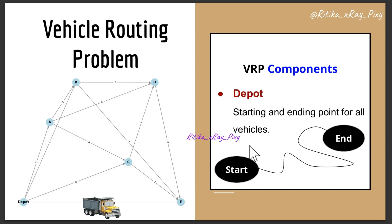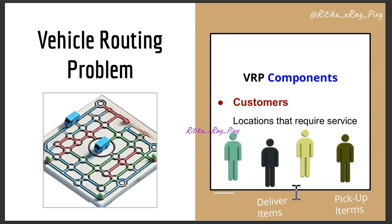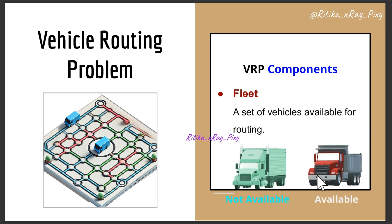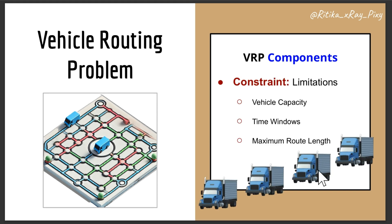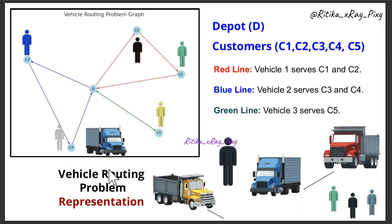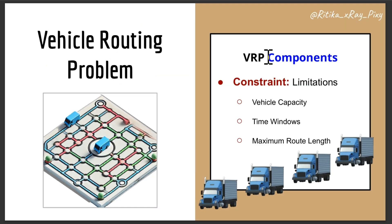The basic components of VRP are: the depot — the starting and ending point for all vehicles; customers — locations that require service like delivery or pickup; the fleet — the number of available vehicles, each with a given capacity; and constraints — restrictions or limitations like vehicle capacity, time windows, or maximum route length. The objective is to minimize total distance, time, and cost while satisfying all constraints.